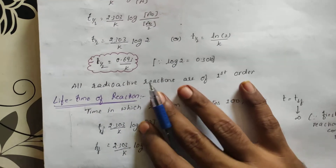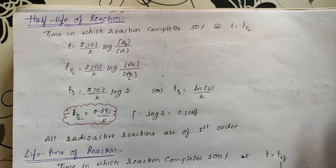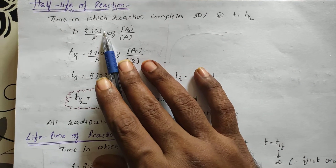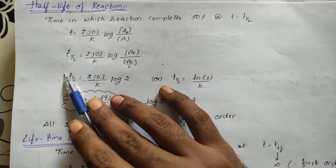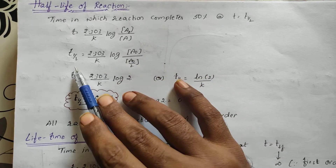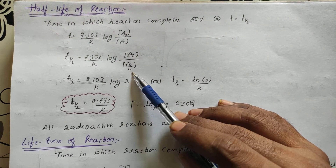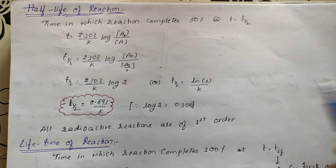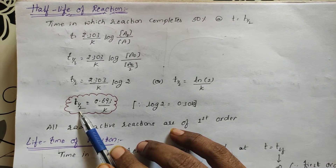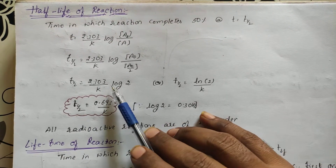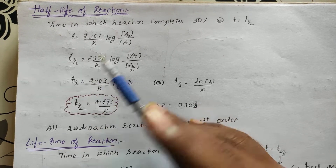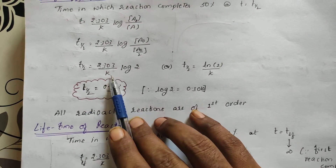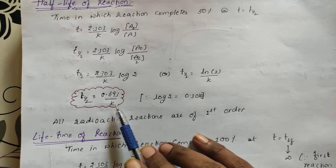Half-life of the reaction: time in which the reaction completes 50%. T½ = (2.303/K)·log(A₀ / (A₀/2)) = (2.303/K)·log 2. Since log 2 = 0.3010, we get T½ = 0.693/K. This can also be written as T½ = ln 2 / K. Importantly, T½ for first order is independent of the initial concentration of the reactant.